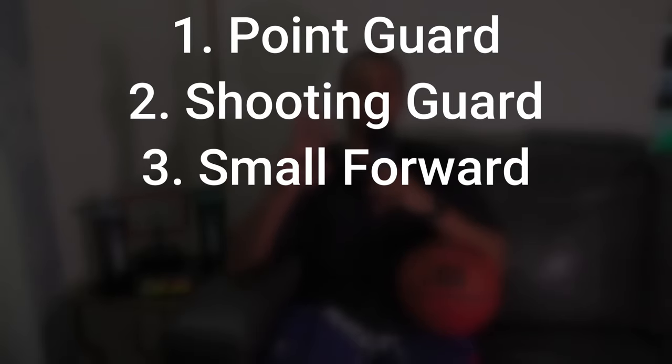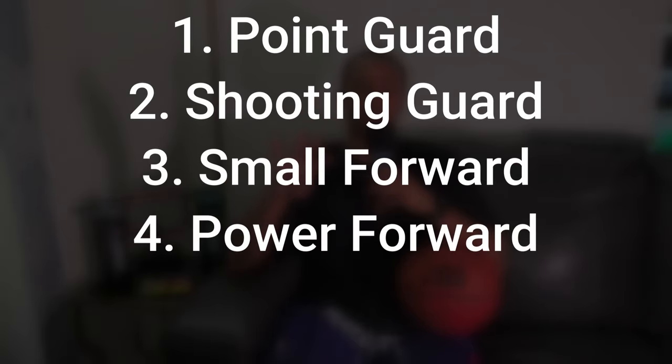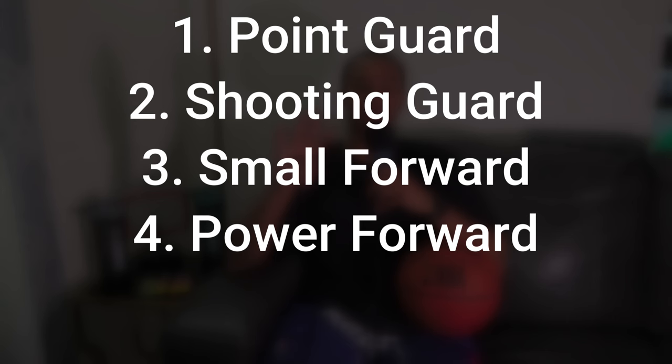The numbers 1, 2, 3, 4, and 5 are the offensive players on the court. This is not like American football where you have a whole separate defensive team — the same five players on offense are the same ones on defense. One is usually your point guard, two is your shooting guard, three is your small forward, four is your power forward, and five is your center.